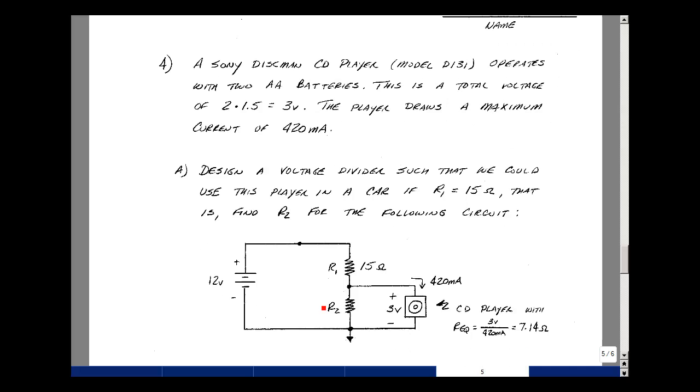In other words, could you solve for R2? I can think of the CD player as a resistor. We know the voltage across it and the current through it, and we could approximate it as about 7.14 ohms.